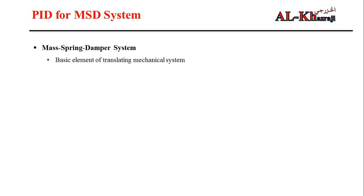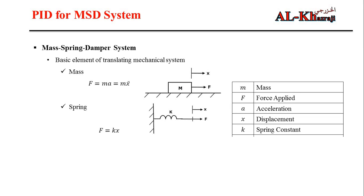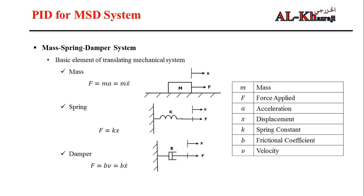The basic elements of any translating mechanical system are the mass, spring, and damper. The force in the mass is equal to mass multiplied by acceleration, which is the second derivative of position X. The force in the spring is equal to the spring constant multiplied by position. The force in the damper is equal to the damping coefficient multiplied by velocity, which is the first derivative of position.